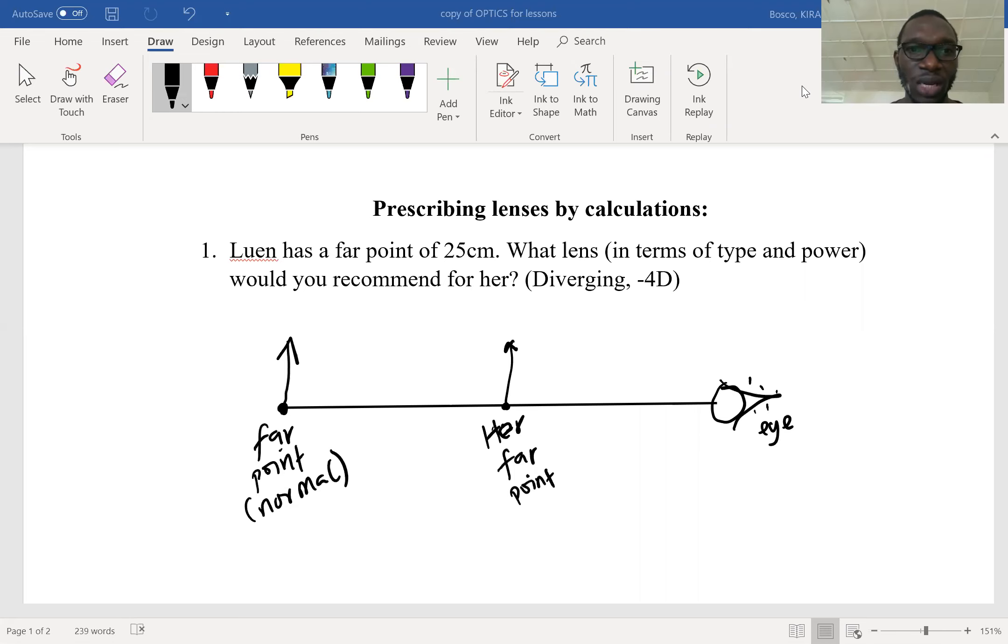We have a question here. Luen has a far point of 25 centimeters. What lens in terms of type and power would you recommend for her? This is the answer that we are striving to get, but let's see how we get to the answer.